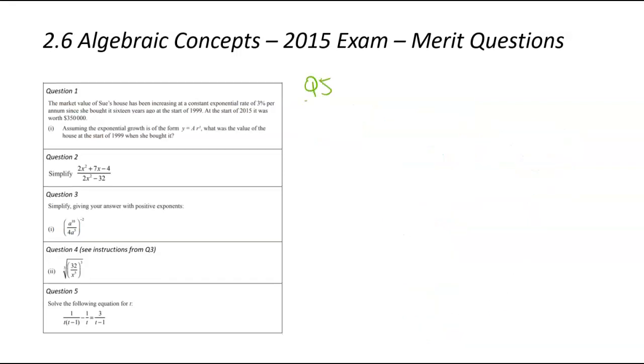Now up to question number 5. This is the last merit question from the 2015 exam. This will be a bit of a long one, but we've got an equation here. We've been asked to solve it. We've got 1 divided by t times t minus 1 subtracting 1 minus t, that's going to be equal to 3 divided by t minus 1. So the first thing to note is having all the variables on the bottom is quite annoying. So what we need to do is we need to get rid of all of that.